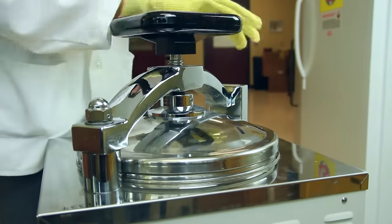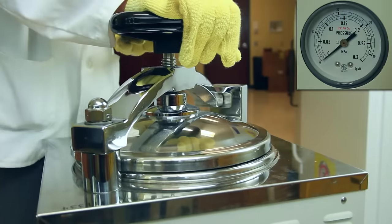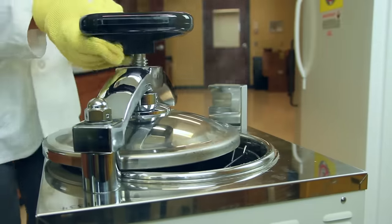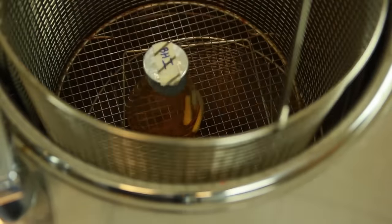Once the cycle ends and the pressure gauge reads 0 PSI, use heat-resistant gloves to slowly open the lid and remove the sterilized flask.